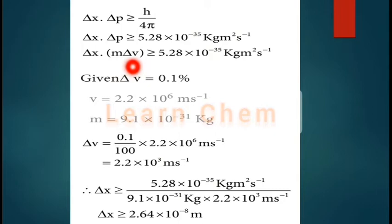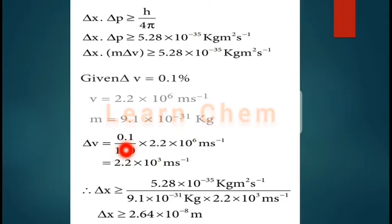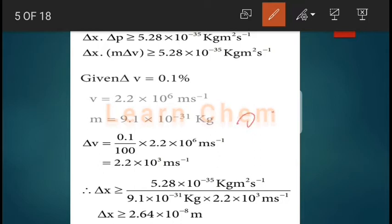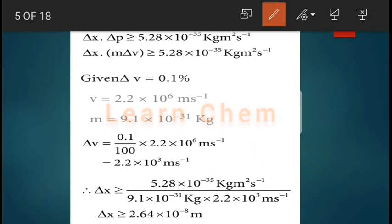The uncertainty in velocity is 0.1% of 2.2×10⁶ m/s. So Δv = (0.1/100) × 2.2×10⁶. Since 0.1/100 = 0.001 = 1×10⁻³, the uncertainty in velocity becomes 2.2×10³ m/s.